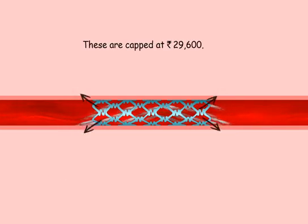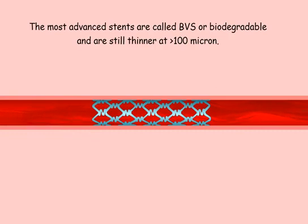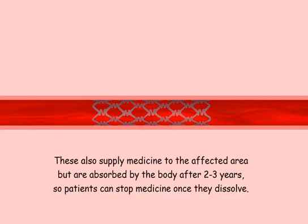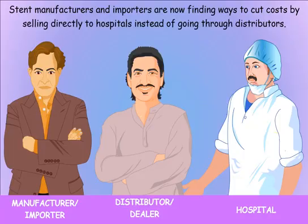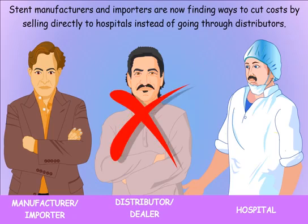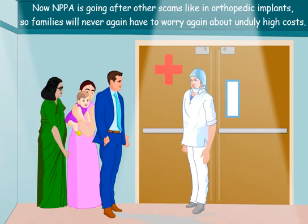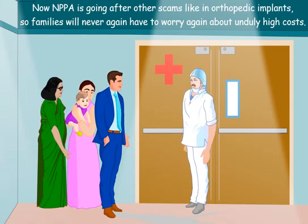Drug eluting stents are capped at 29,600 rupees. The most advanced stents are called BVS or biodegradable, and are still thinner at less than 100 microns. These also supply medicine to the affected area, but are absorbed by the body after about 2-3 years, so patients can stop medicine once they dissolve. Stent manufacturers and importers are now finding ways to cut costs by selling directly to hospitals instead of going through distributors. Now the NPPA is going after other scams like in orthopedic implants, so families will never have to worry again about unduly high costs.